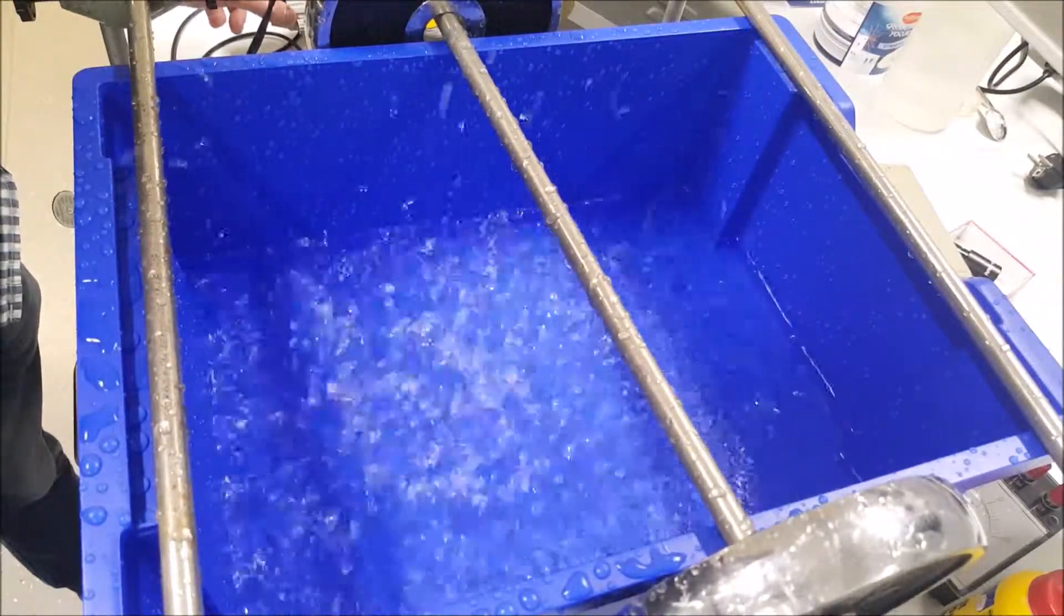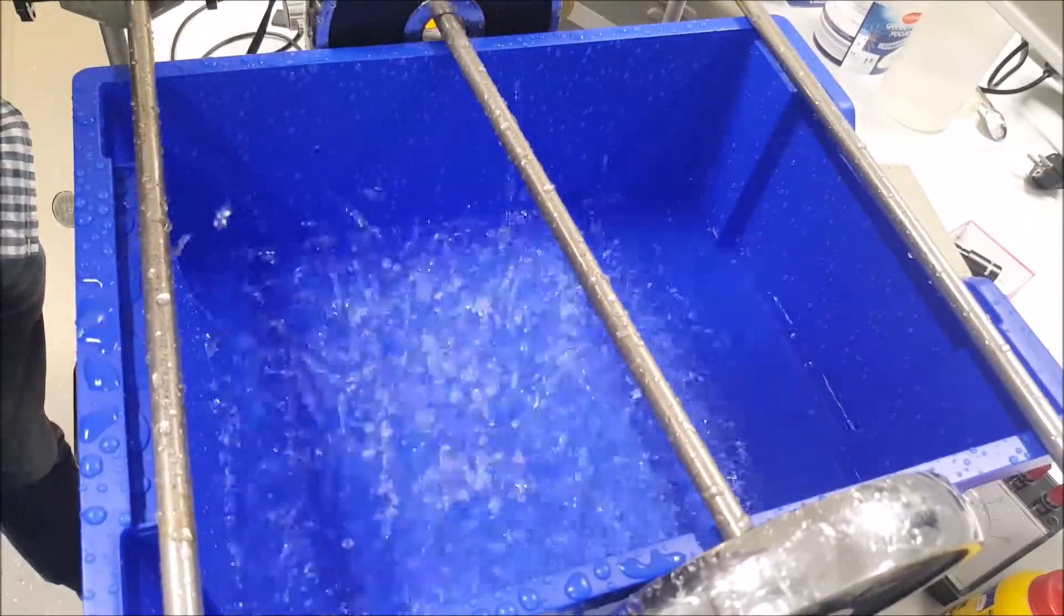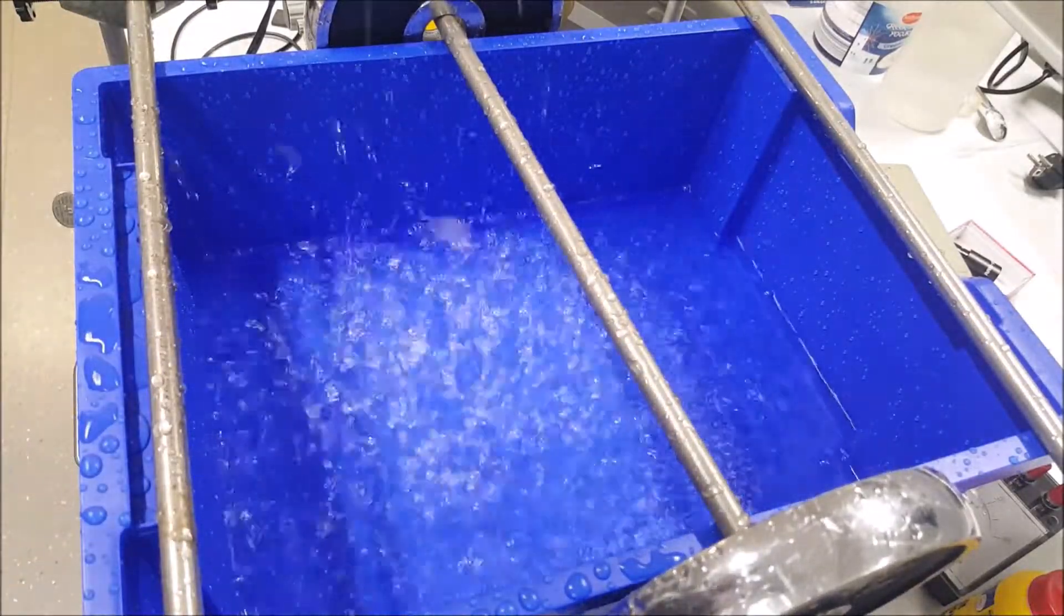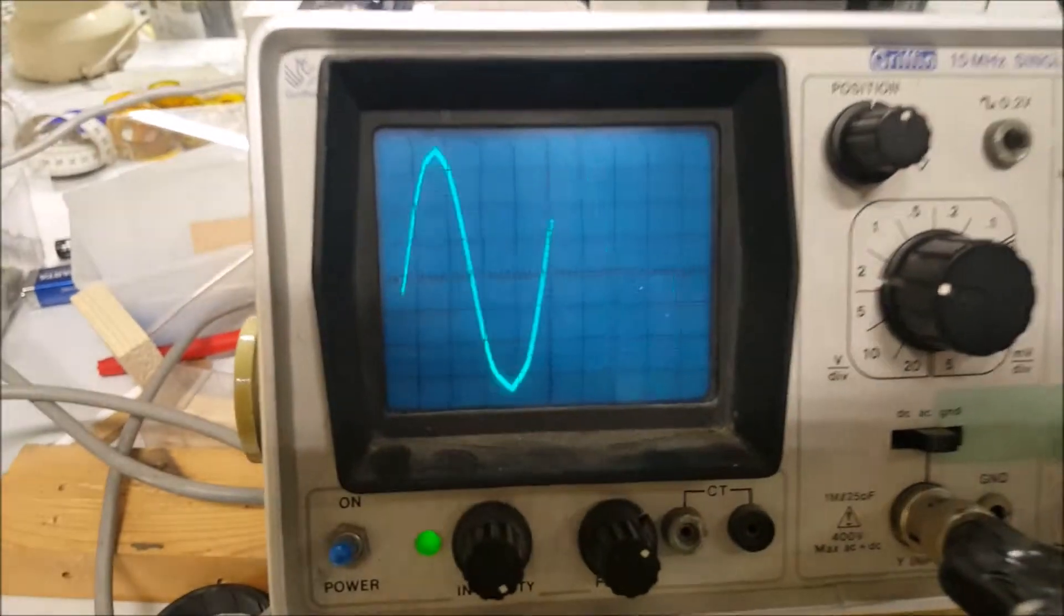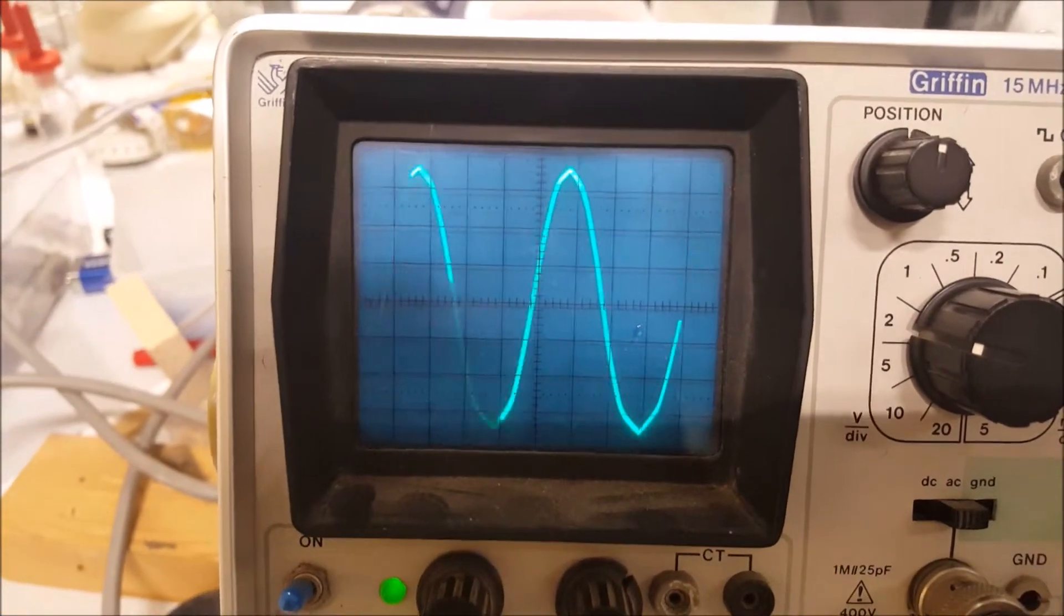This should be the most perfect frequency for the splashing water. Now let's have a look at the frequency on the oscilloscope. This is what the oscilloscope is showing. I'll give you a standstill motion.